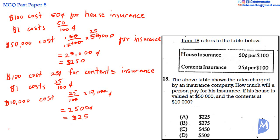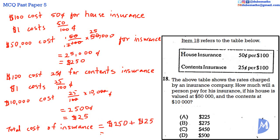Therefore, the total cost of insurance is equal to $250 added to $25, which is equal to $275. The answer is B.